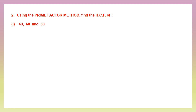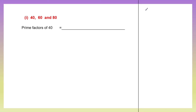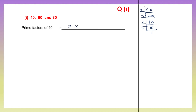Question 2: using the prime factor method, find the HCF of 40, 60 and 80. So let's find all the prime factors of 40, starting with 2. 2 into 20 is 40, 2 into 10 is 20, 2 into 5 is 10. Continue dividing by 5. 5 into 1 is 5. So the prime factors of 40 are 2 × 2 × 2 × 5.